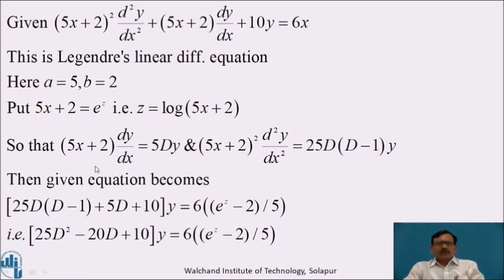So that (5x + 2) dy/dx = 5 · D(y), and (5x + 2)² d²y/dx² = 25 · D(D-1)y. Then the given equation becomes [25D(D-1) + 5D + 10]y = 6 · (e^z - 2)/5, that is (25D² - 20D + 10)y = 6(e^z - 2)/5.